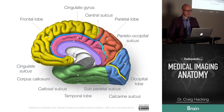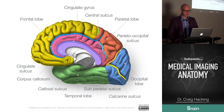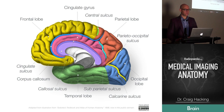If that cingulate sulcus continues underneath the parietal lobe, that's called the subparietal sulcus. We've already talked about the parieto-occipital sulcus dividing the parietal and occipital lobes, and then the calcarine sulcus. That's a really important one for the visual cortex — there's half a visual cortex above and half below, and it's opposite.